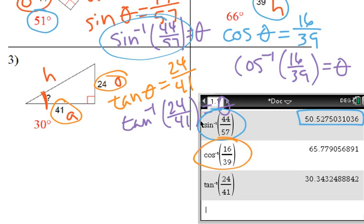For the second one, inverse cosine of 16 over 39, 65.779, round up to 66.